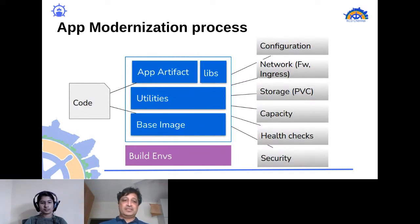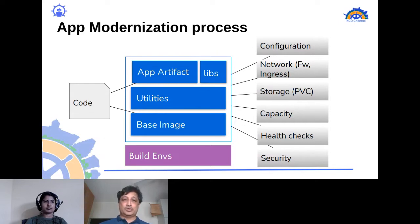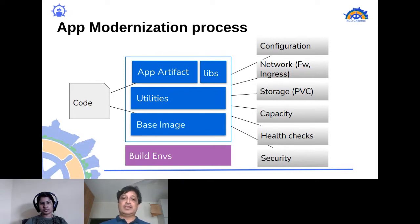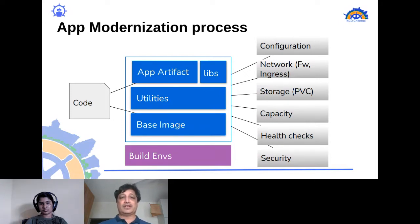An application starts with its source code. For a Node.js app it has source code, a base image such as Ubuntu OS, Node.js version 8, various utilities needed to build in that environment, related libraries, and in the case of Java — Java libraries and app artifacts like JAR files.